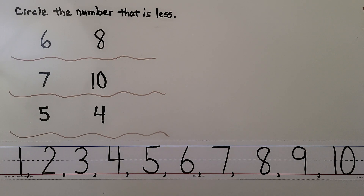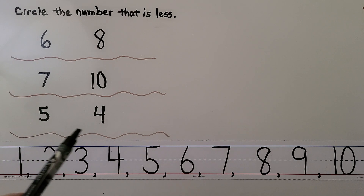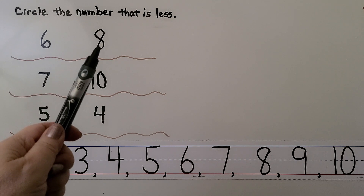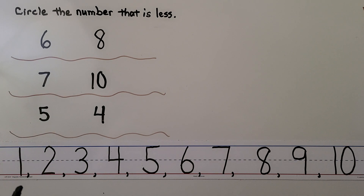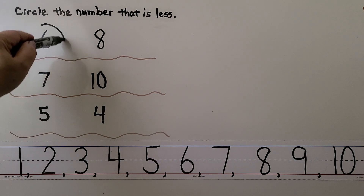Here we have more number pairs: six and eight, seven and ten, and five and four. We need to circle the number that is less. We think about counting order — the number that is less comes first. Less means fewer, not as many. For six and eight, counting one through eight, six comes first in counting order. Six is less than eight.